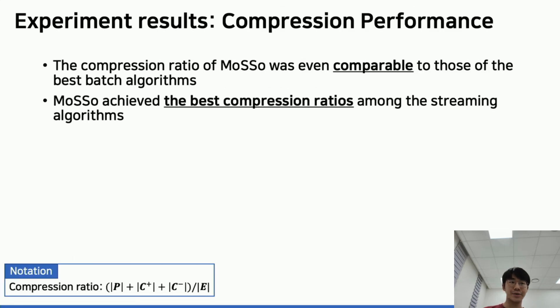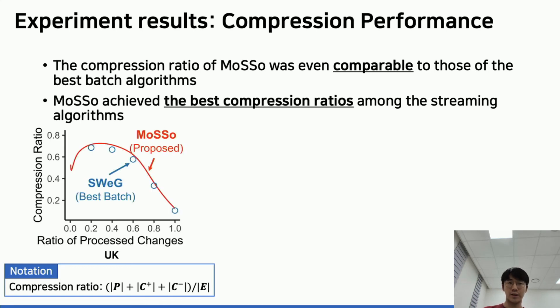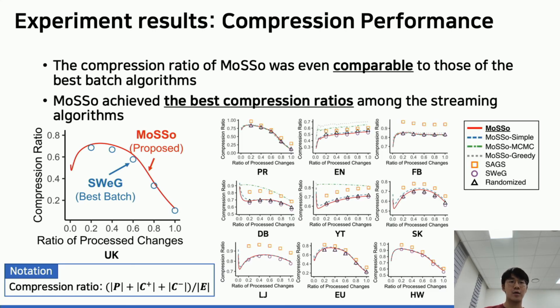Next, we measure the compression ratio of each algorithm. To our surprise, the compression ratio of MoSso was even comparable to that of the best batch algorithm SWeG. This trend appears in all datasets we have. In addition, this extensive experiment illustrated MoSso wins over the other streaming baselines in terms of compression ratio as well.